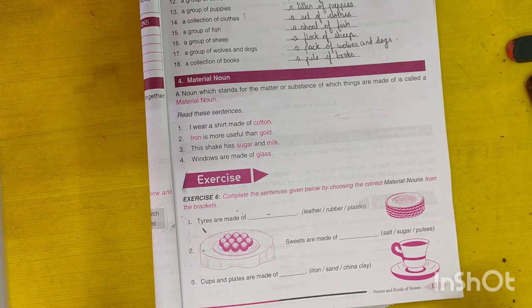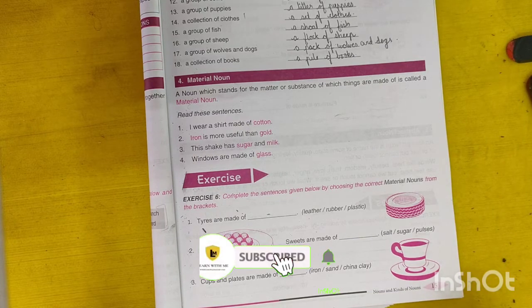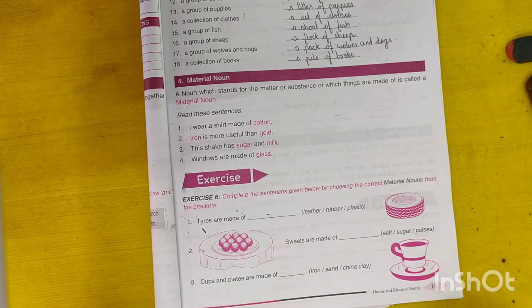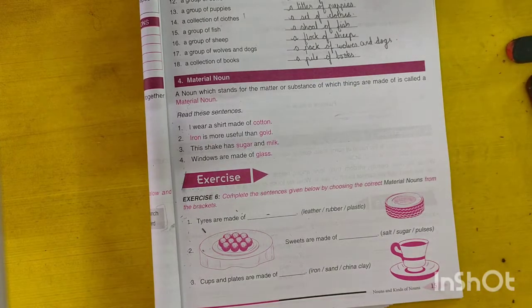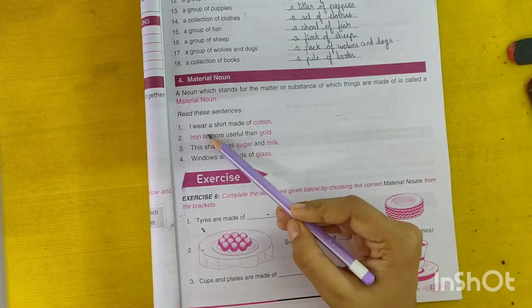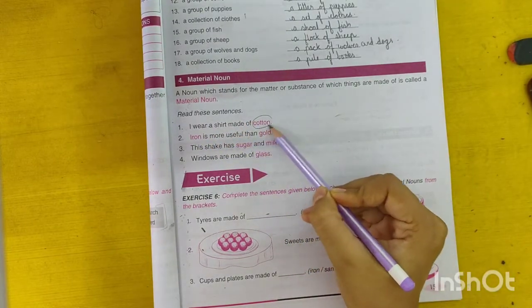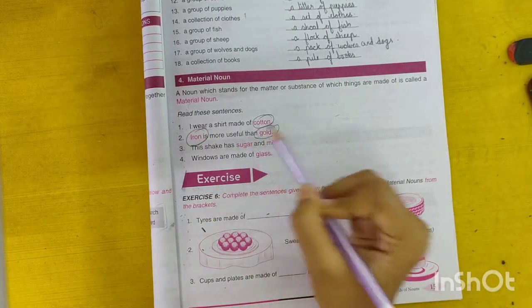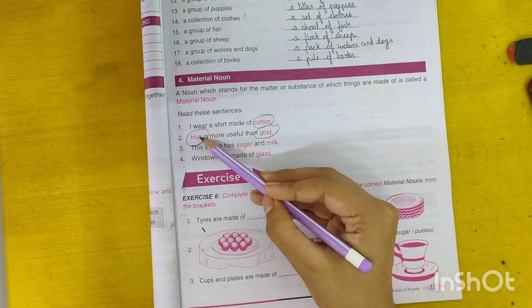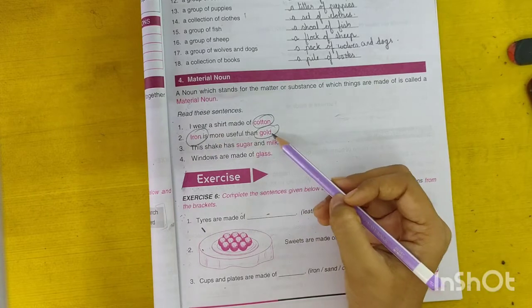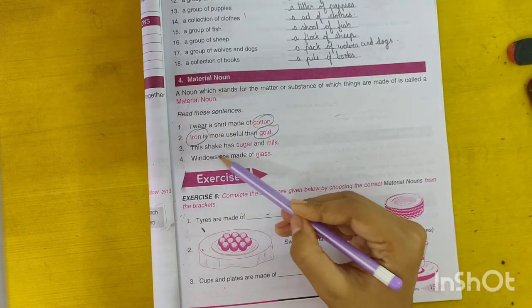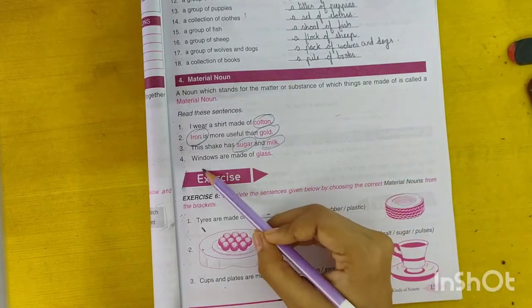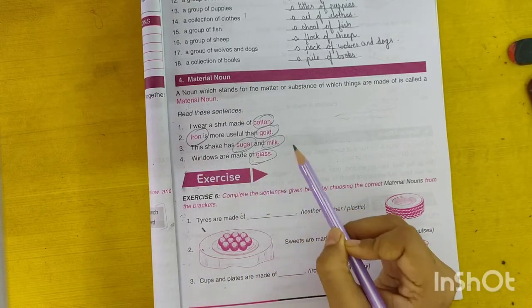For example, earrings are made of gold. Gold is the material noun. The pile of anklet is made of silver. Silver is a material noun. I wear a shirt made of cotton. Here, cotton is a material noun. Iron is more useful than gold. Iron and gold are material nouns. This shake has sugar and milk. Here sugar and milk are material nouns. Windows are made of glass. Glass is a material noun.